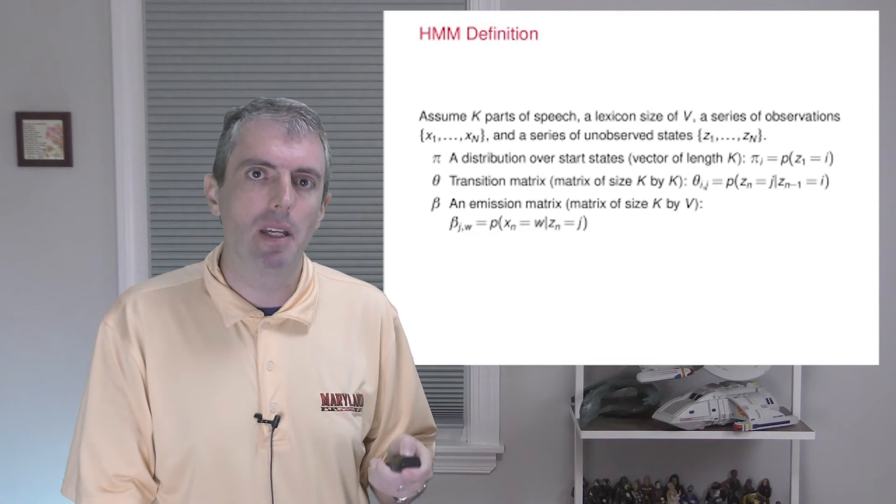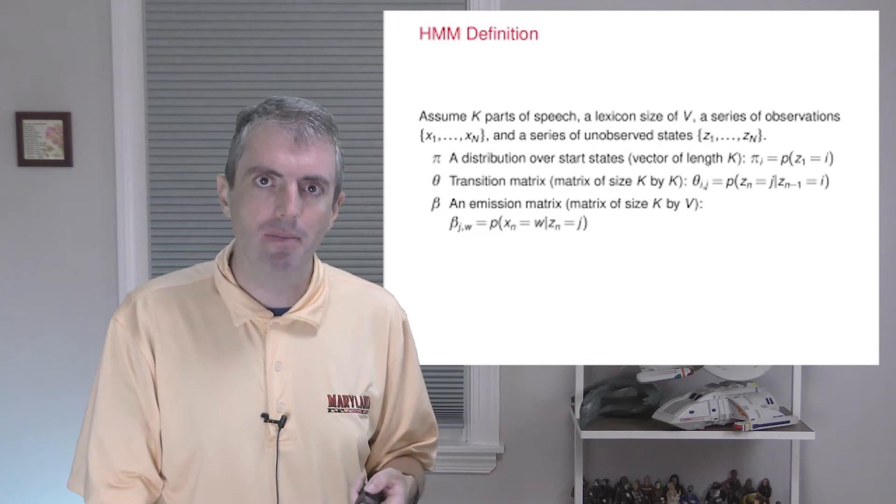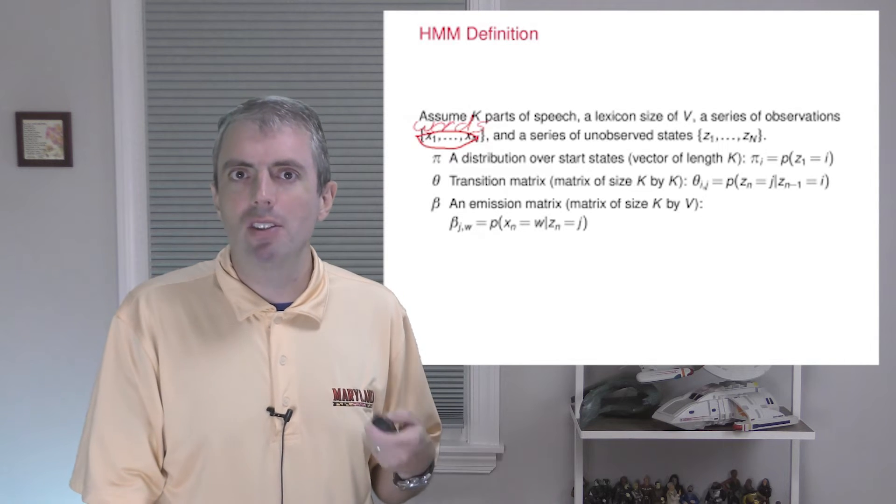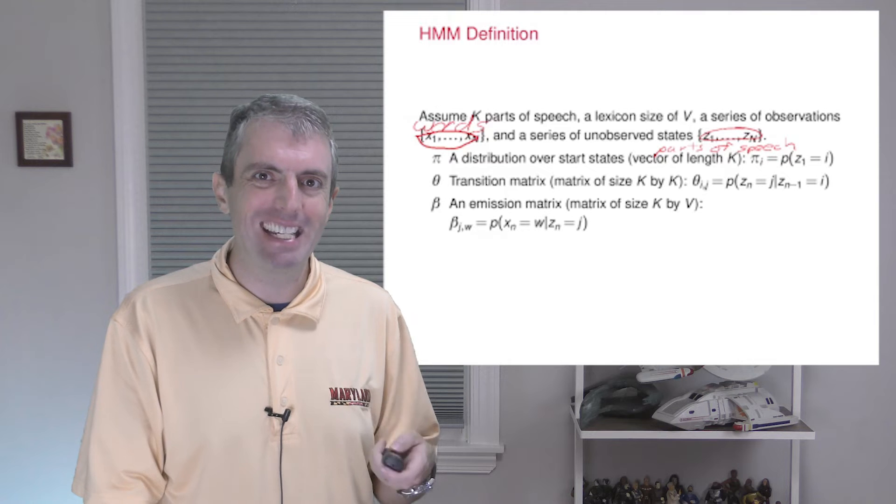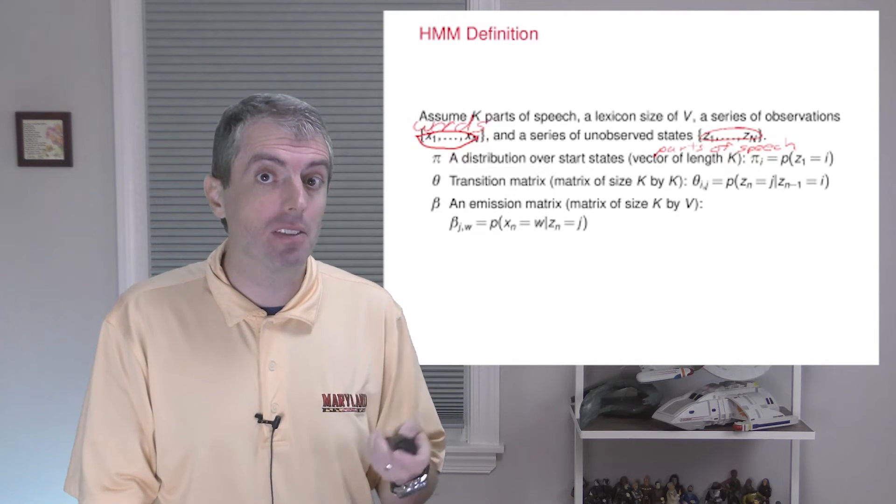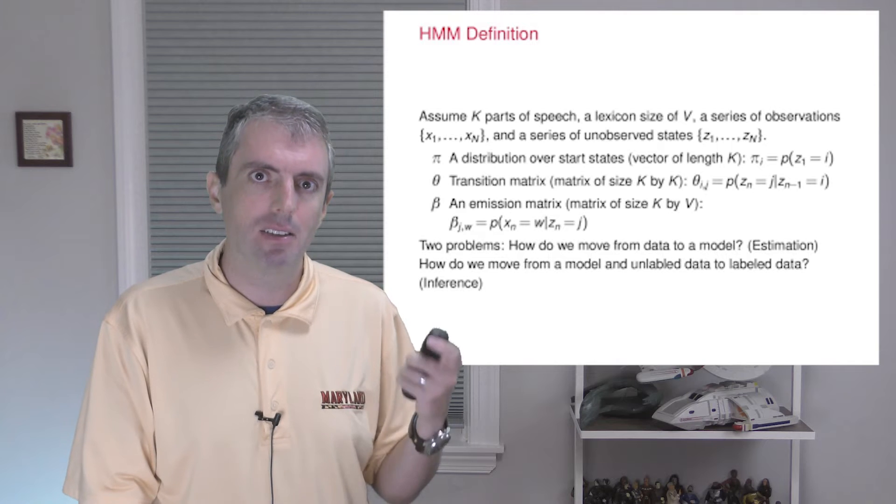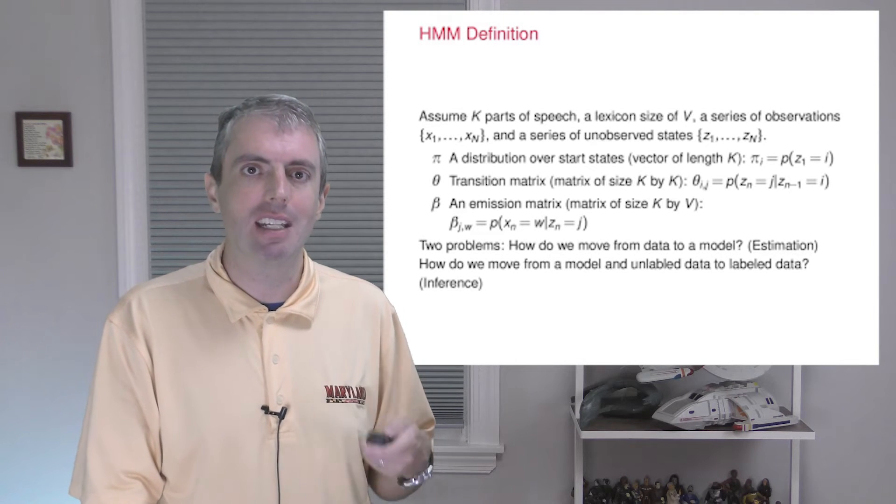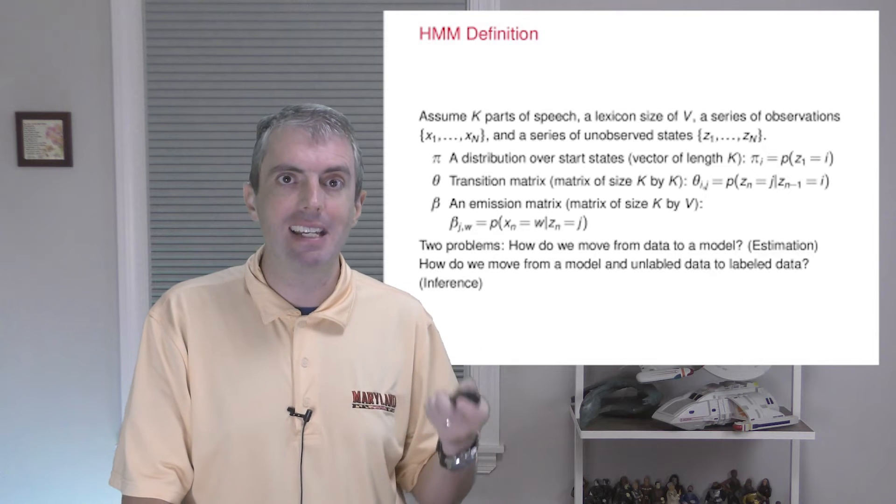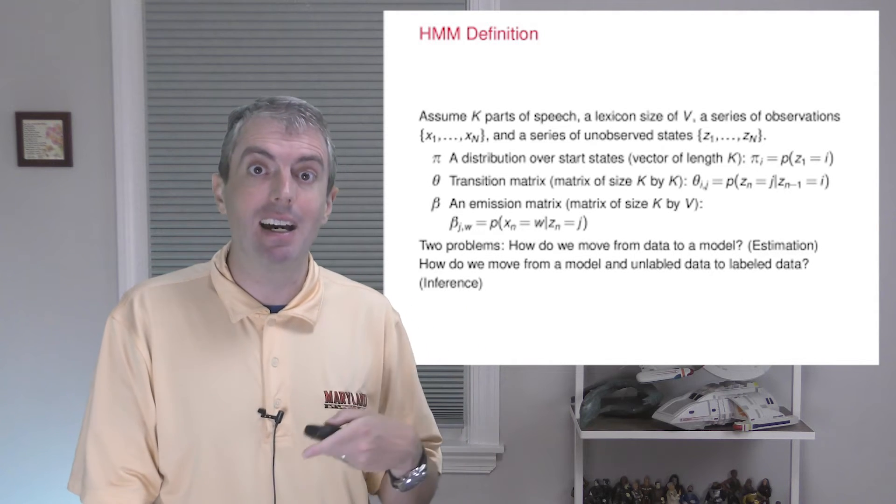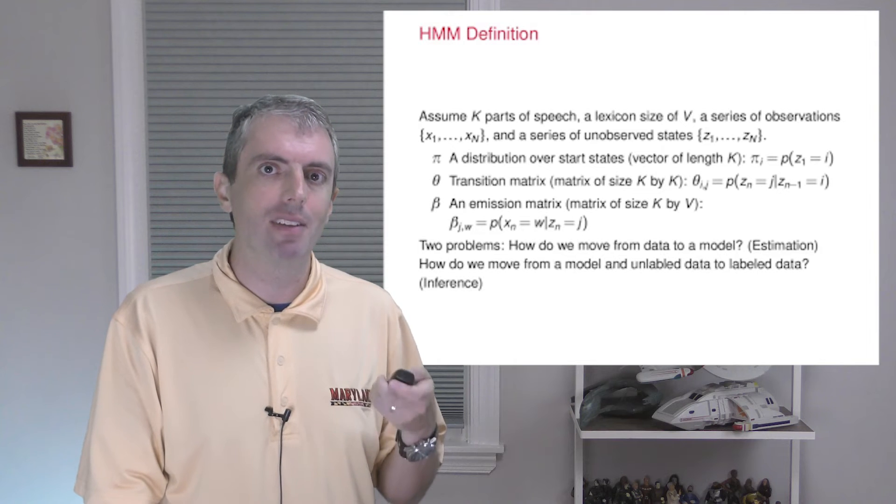Assume that you have k parts of speech and a dictionary lexicon of size v. And you have some observations x1 to xn. The x's are your words, and to go along with every word, you have a series of unobserved states z1 through zn. These are your parts of speech. We assume that we have a distribution over start state and this is a vector of length k that tells us what is the probability of having i as our first part of speech in the sentence. We also have a transition matrix that tells us what is the probability if you're in state i at time n-1 that you'll be in state j at time n. We also have an emission matrix beta that tells you what is the probability of emitting a particular word w given that you're in state j.